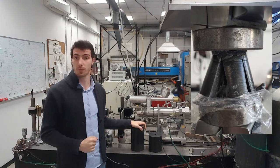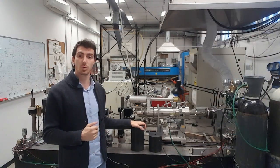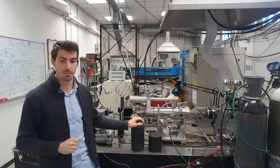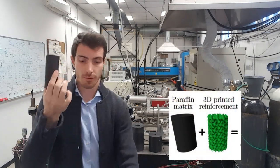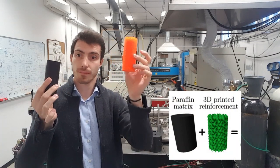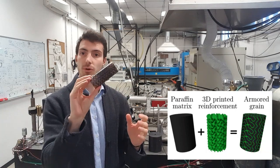So they need to be reinforced to make them a real fuel. During the PhD, a novel approach was conceived taking advantage of 3D printing and inspiration from nature. The paraffin fuel is reinforced by embedding a 3D printed cellular structure and we obtain the armor grain.